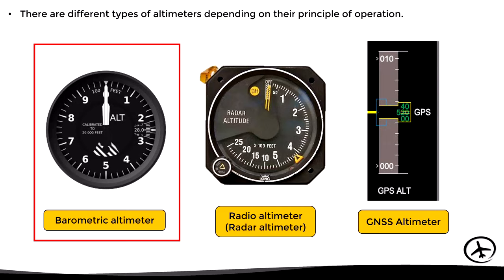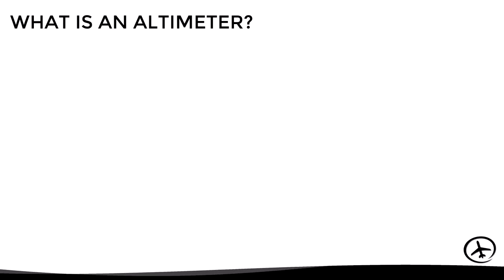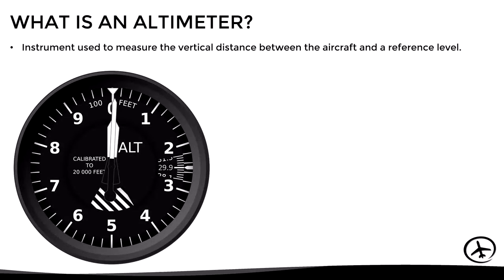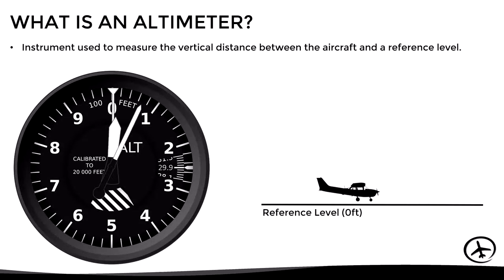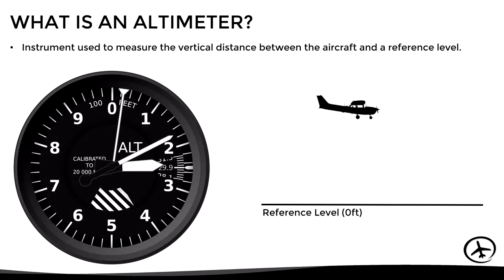In this particular video we will focus on the barometric altimeter, as it is the one used in most air operations and can be found in all aircraft. In simple terms, this is an instrument that measures the vertical distance between the aircraft and a specified reference level. This reference level will be the one at which the altimeter will indicate zero.